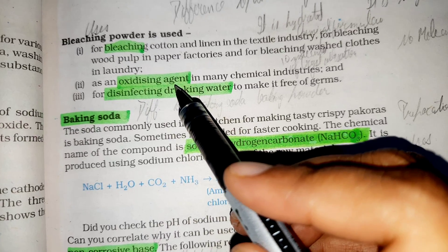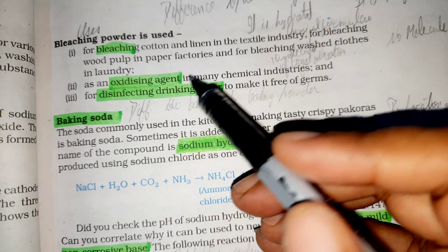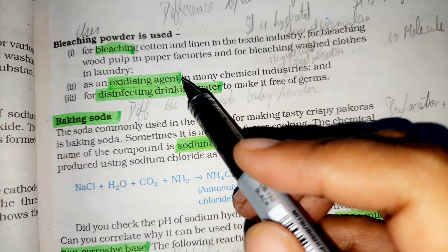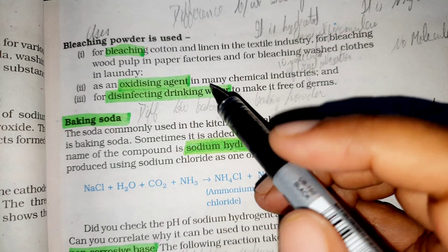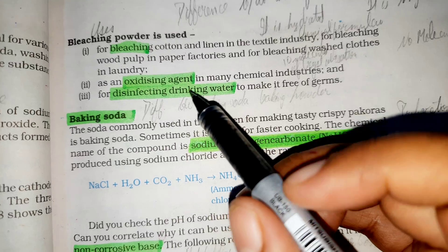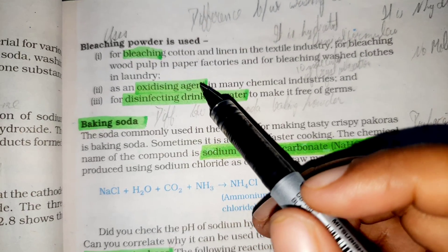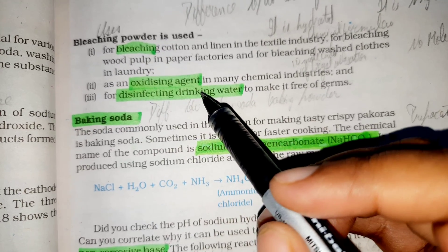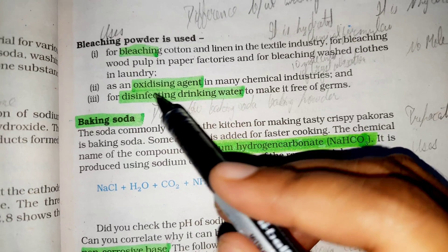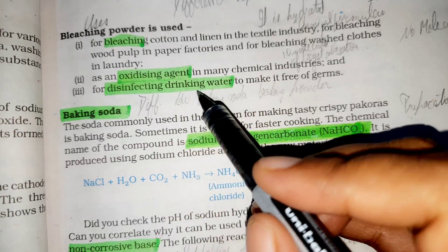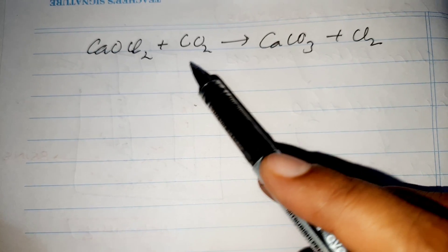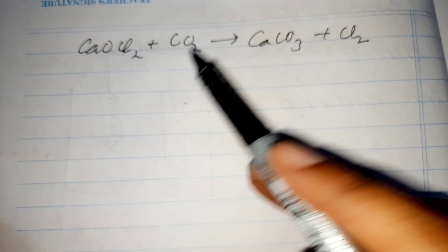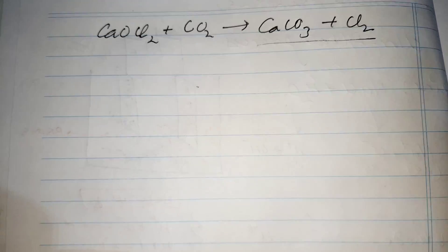Bleaching powder acts as an oxidizing agent. When it reacts with acids, it releases Cl₂ — chlorine gas. Moreover, when bleaching powder combines with CO₂ (carbon dioxide), it also produces chlorine. That chlorine is actually a good bleaching agent. The bleaching powder should contain 35 to 38 percent chlorine to work as a good bleaching agent. It is an oxidizing agent and bleaching agent due to chlorine, and is used for disinfecting water — again due to the presence of chlorine. When bleaching powder reacts with CO₂ present in the atmosphere, it releases chlorine.